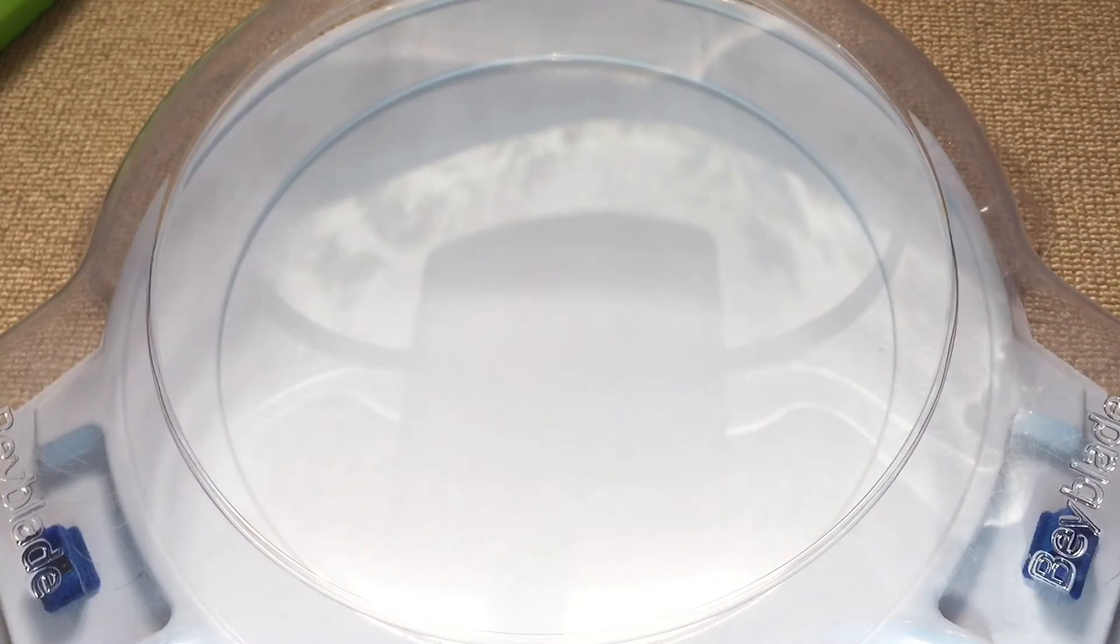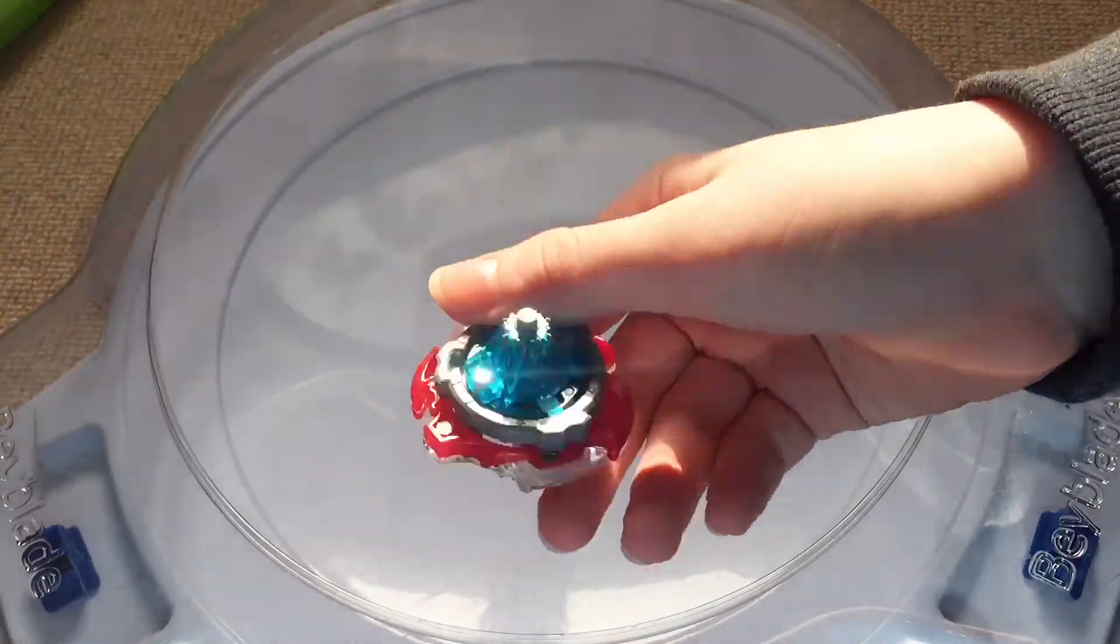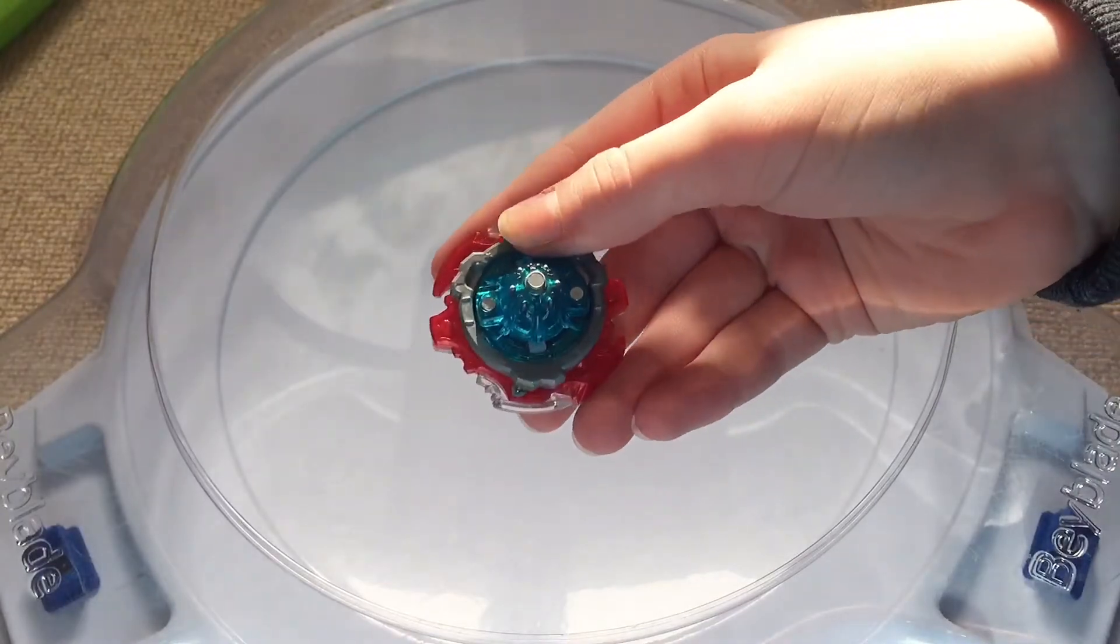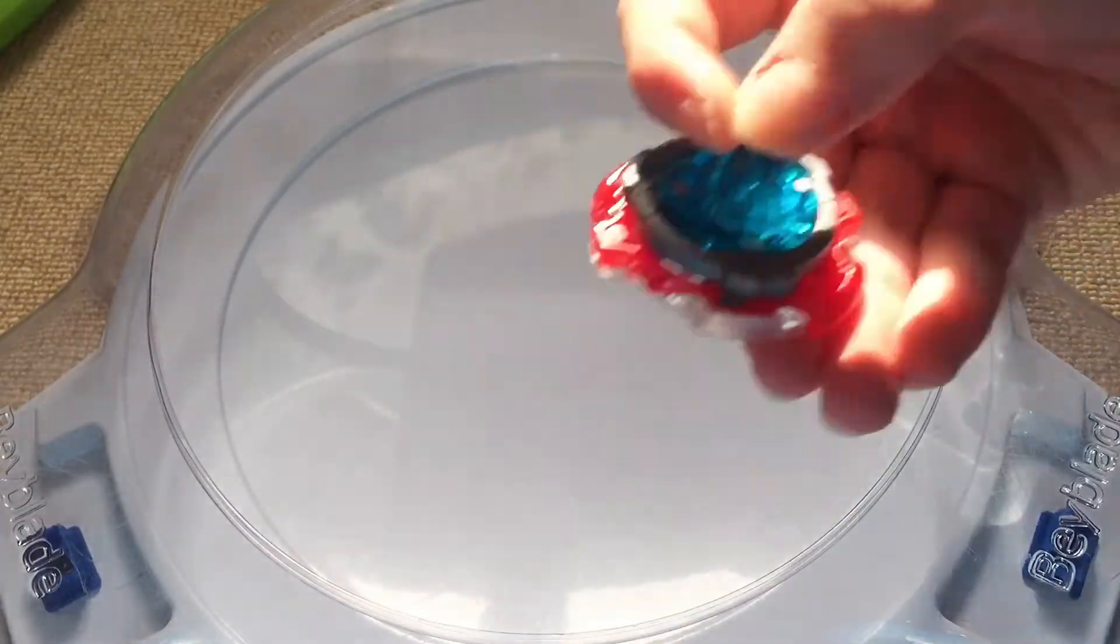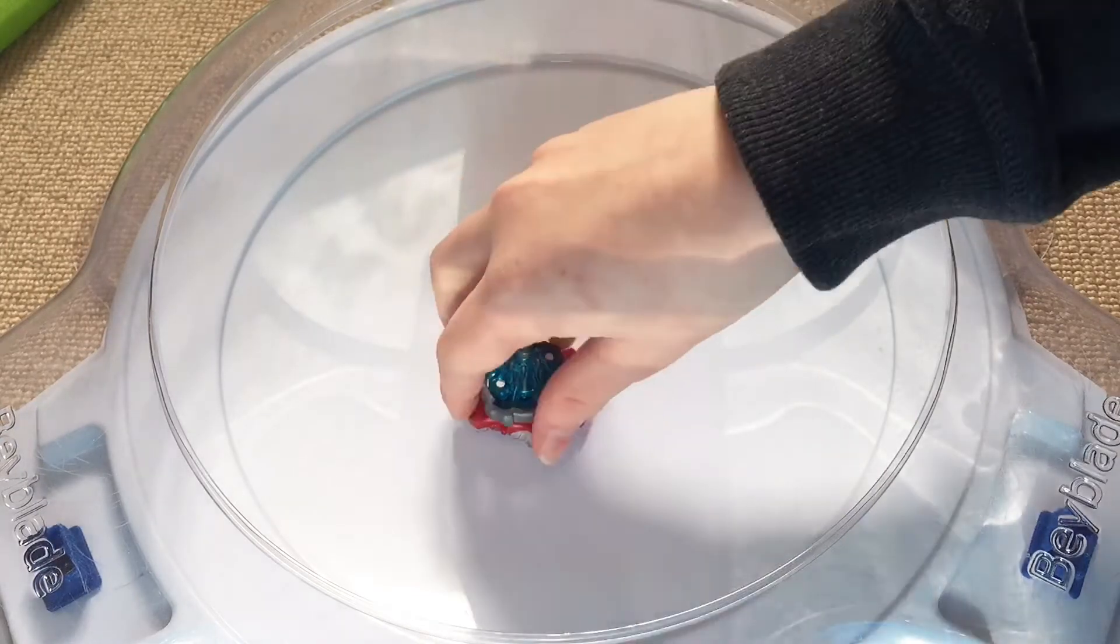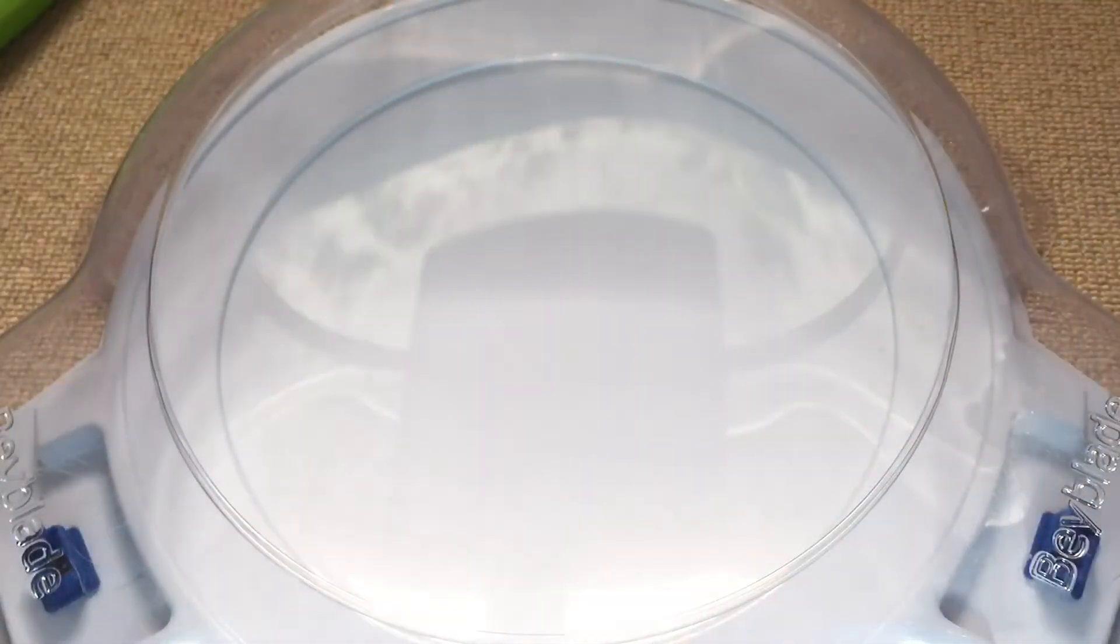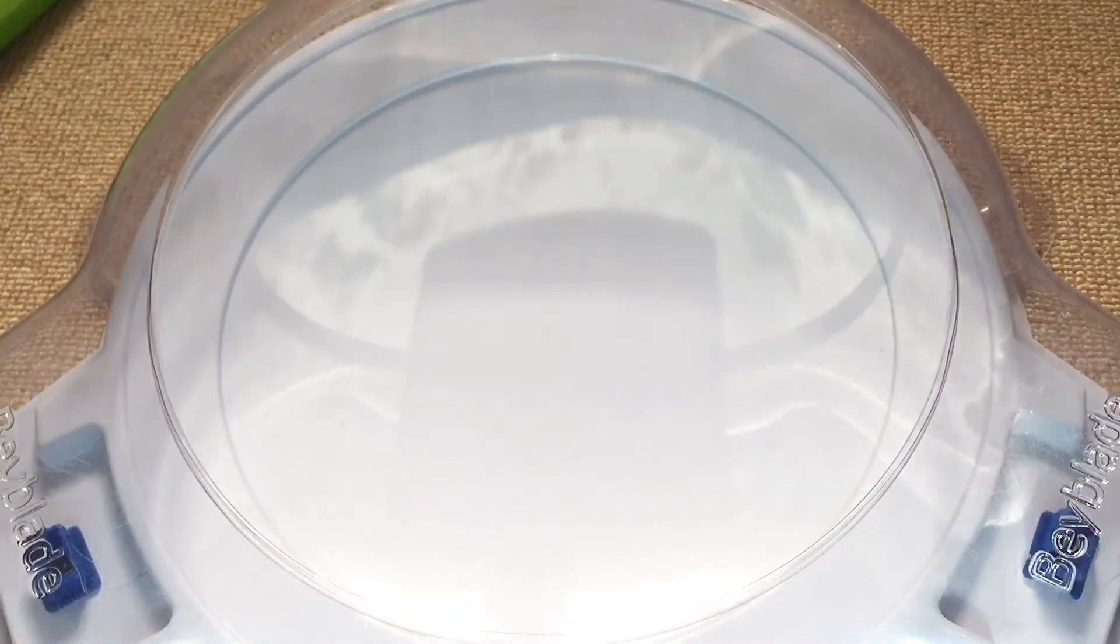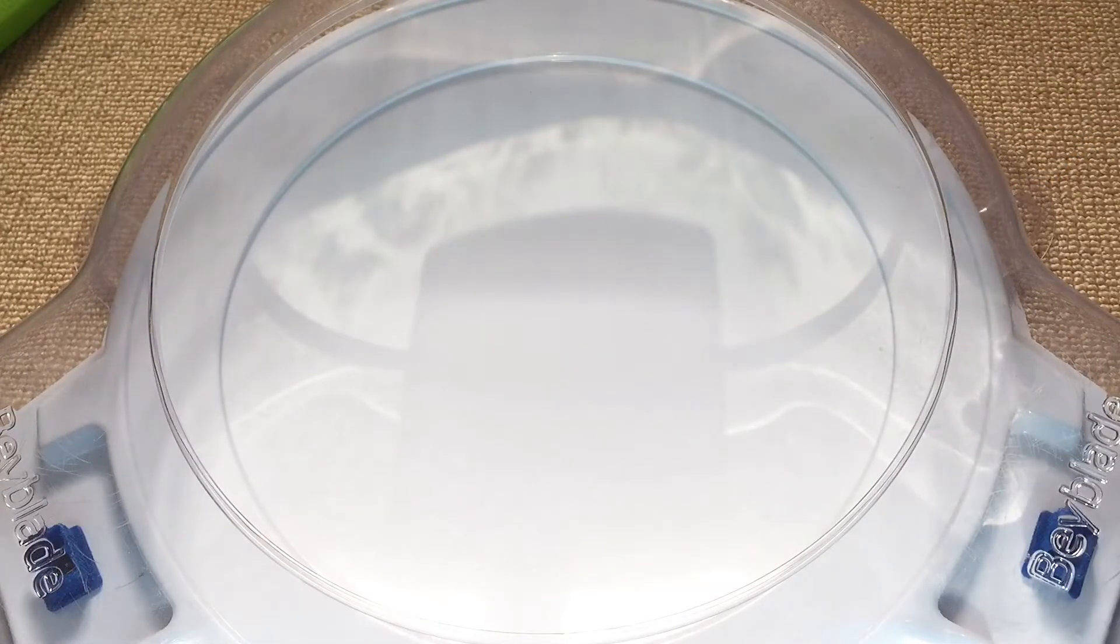Now, for the Takara Tomy combo, it is going to be Storm Spriggan Triple and Iron. Now I chose Iron because the springs are so weak that it makes this Beyblade probably easier to burst than this Beyblade, so both are equally bad, but I feel like this is a good attack combo, only if the clicks were a little bit better.